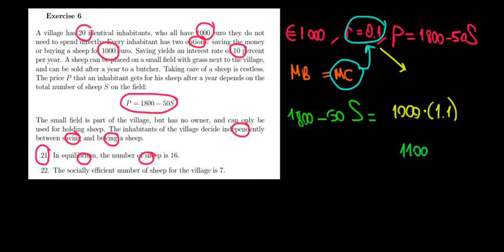Setting marginal cost equal to marginal benefit: 1100 = 1800 - 50S. If we solve this by taking the 1100 to the other side, it would be 1800 - 1100, and that's 700.